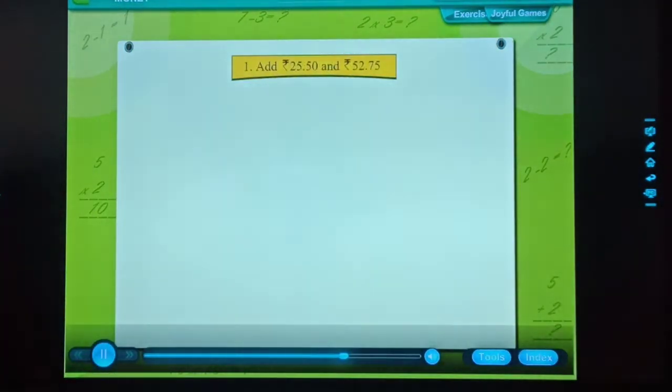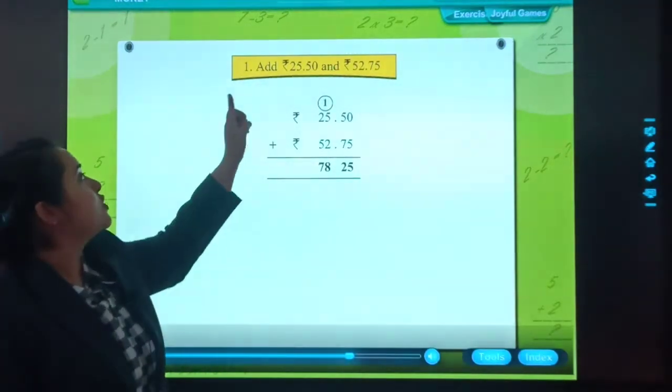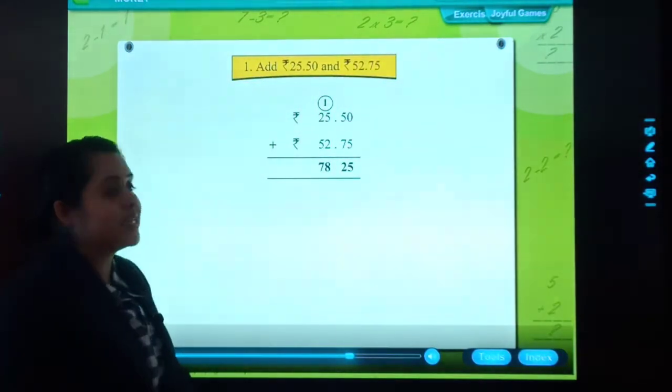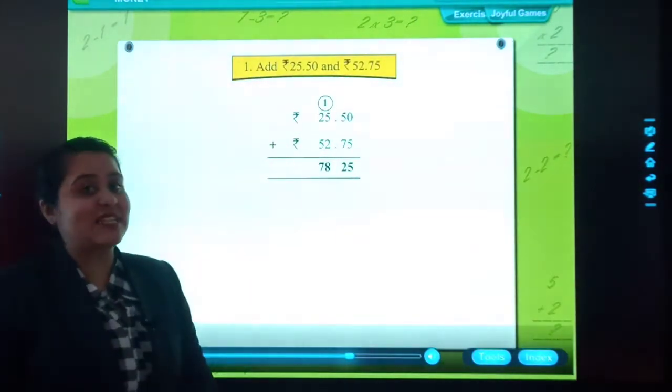Add rupees 25, 50 paise and rupees 52 and 75 paise. So students, the question is, add rupees 25, 50 paise and rupees 52, 75 paise.